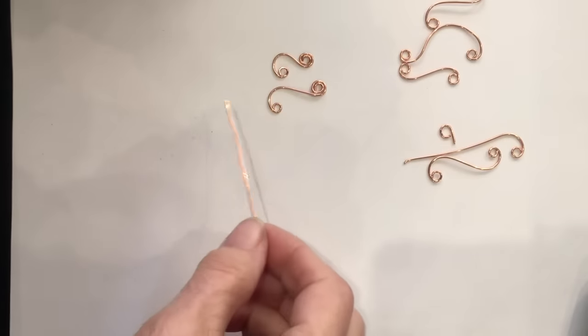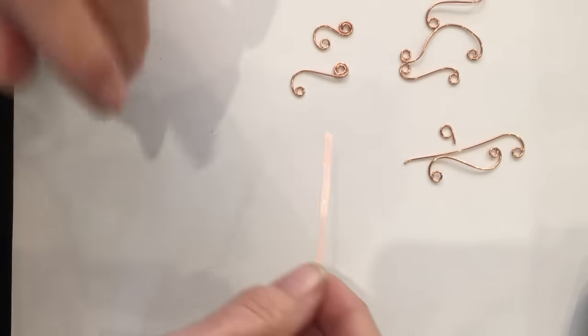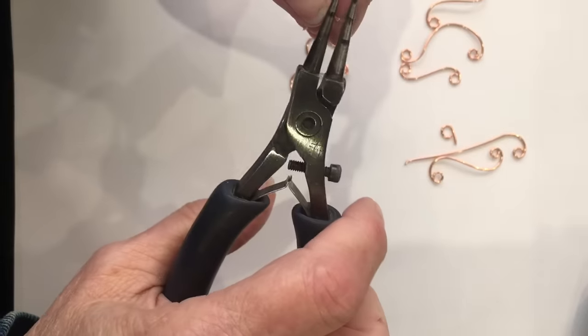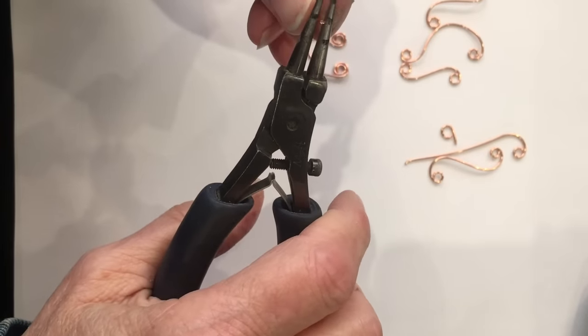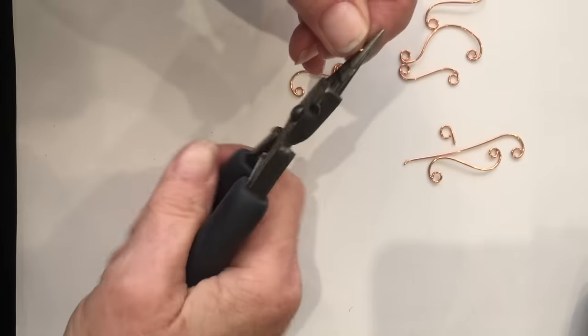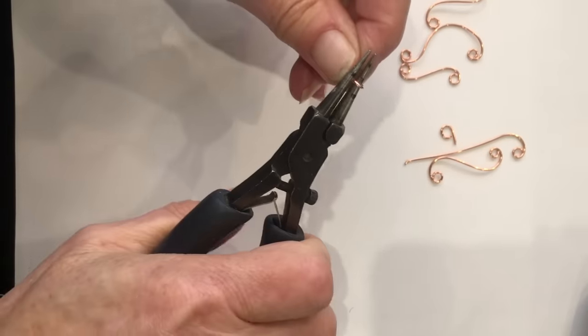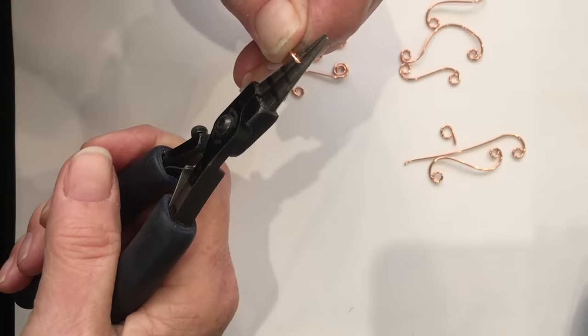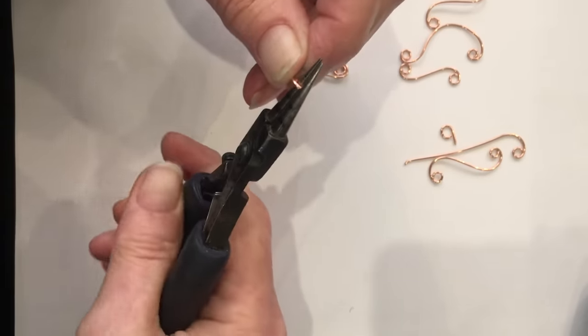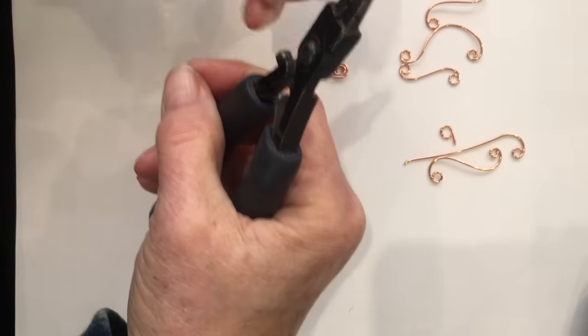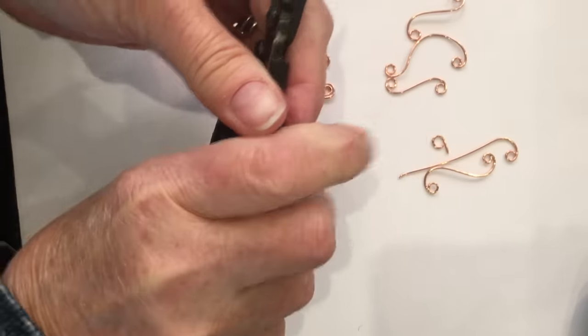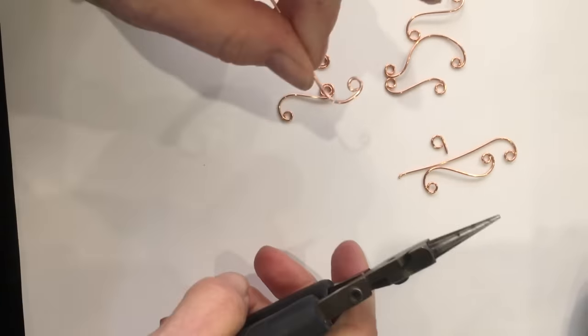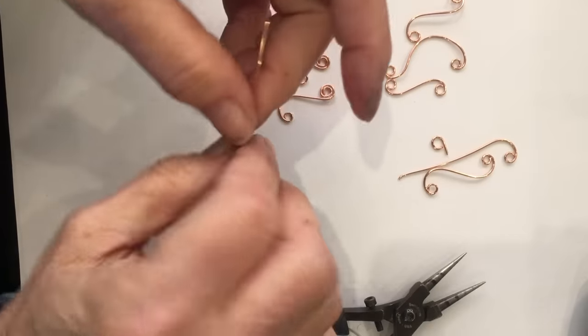Now I'm going to show you how to make a question mark scroll. So this is about three inches by the way. Pick your spot, go ahead and make a circle. One, two, three. And I'm going to go ahead and make the wide scroll here. So I'm going to slip my hand down, around and push with my finger. There's that part of it.